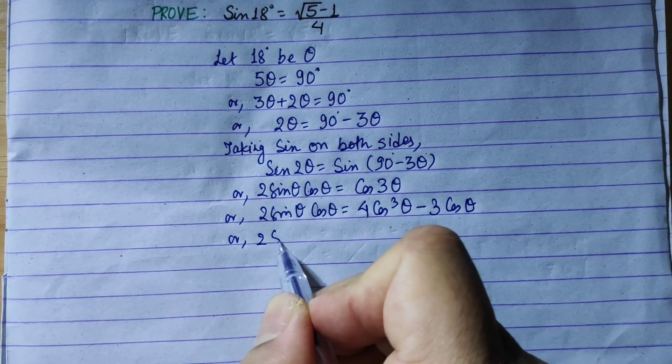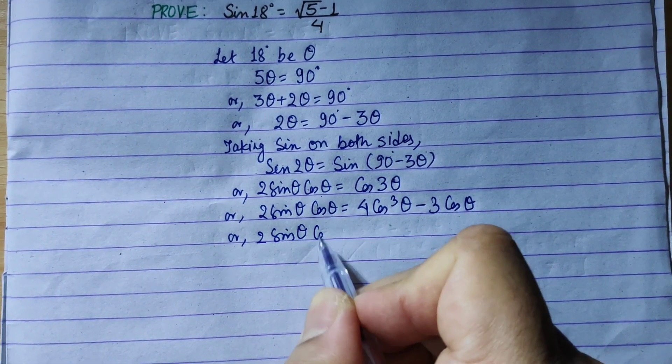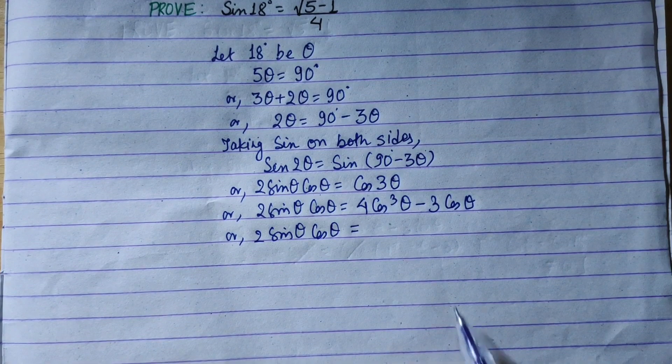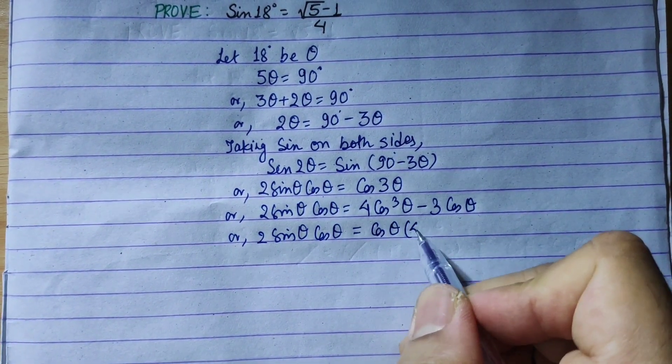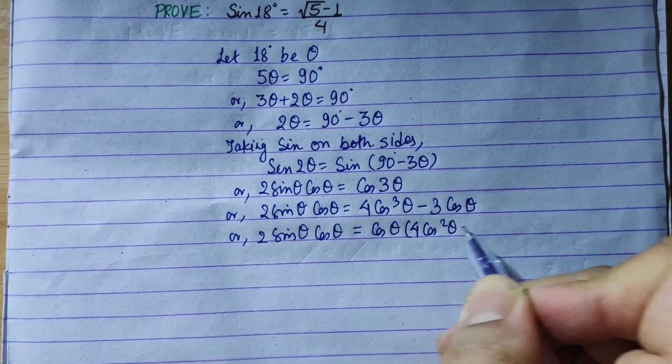Further simplifying, 2 sin theta cos theta is equal to, for cos we have the formula 4 cos square theta minus 3.